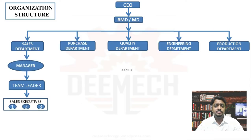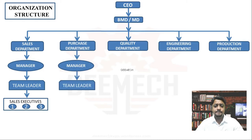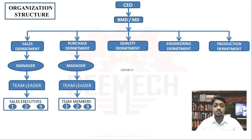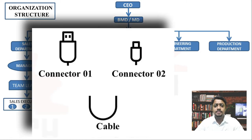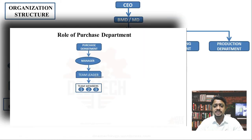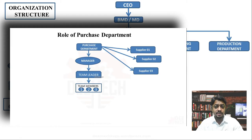Similar to the sales department, the purchase department has a purchase manager, purchase team leader, and purchase team members. The purchase department works on raw materials — they check the present stock with the help of the engineering department. If the required materials are not available, the purchase team, in coordination with engineering and production departments, will contact suppliers in the market to find the best supplier at a reasonable price.